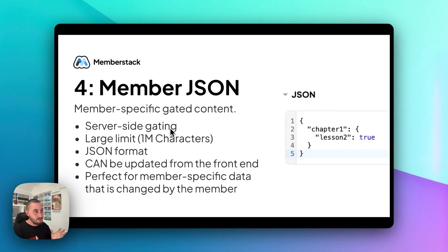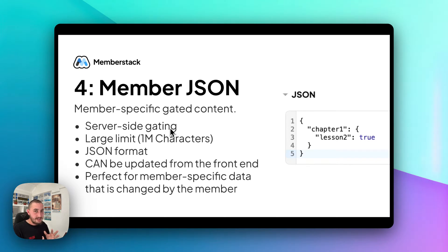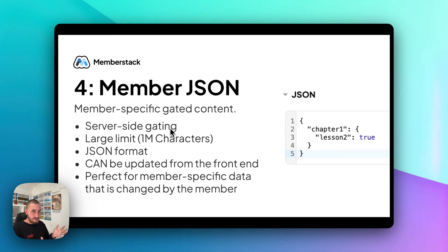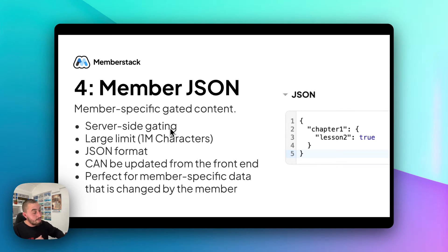Some things about this: it has a large limit — each member can have 1 million characters of JSON, which really gives you a ton of possibilities. It is in JSON format, so anything that you do will have to be able to pass through in JSON format. Something to keep in mind is that it can be updated from the front end, which means if you have a script using the front-end API that is allowing people to add or remove things from their JSON, they have total control over that. For example, we have 'chapter 1 lesson 2' marked as true, meaning they've completed that — this example is for a course site where we want users to be able to say 'I finished this lesson.' But if you want to have full control where the member can never touch it and it can only be updated from the back end, then member JSON isn't for you.